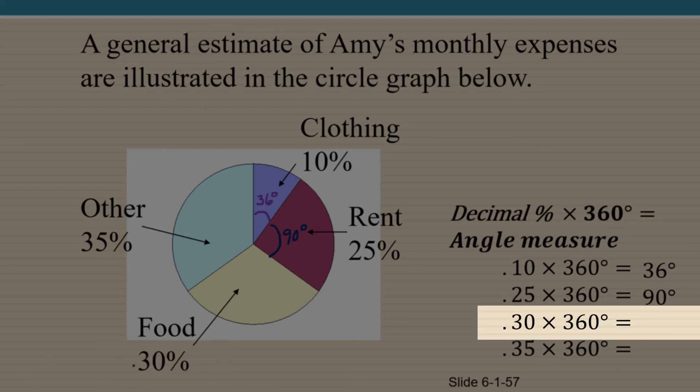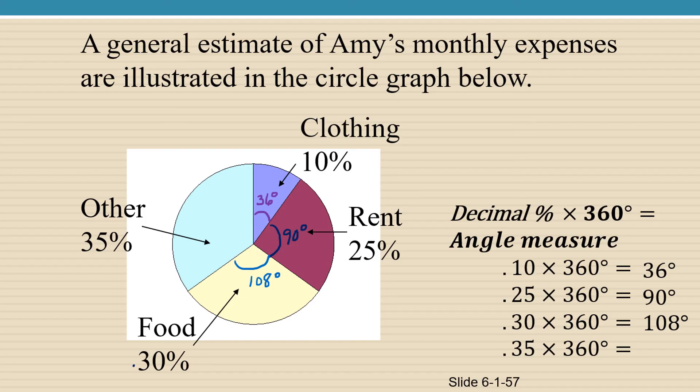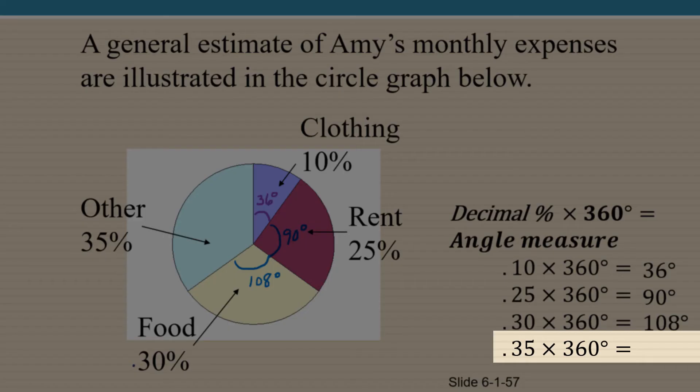0.30 times 360 is going to give us 108 degrees. And the remaining category of 35% — we multiply 0.35 times 360.